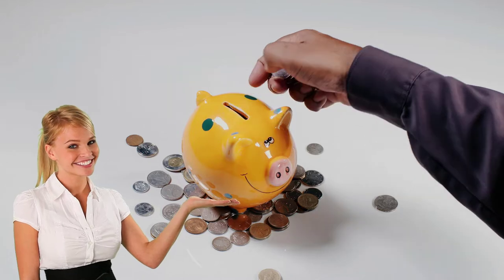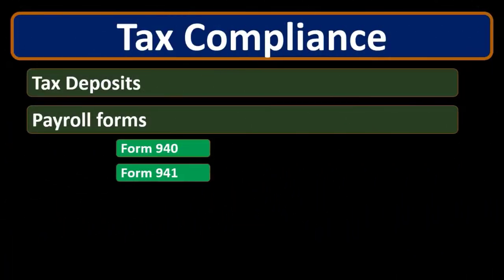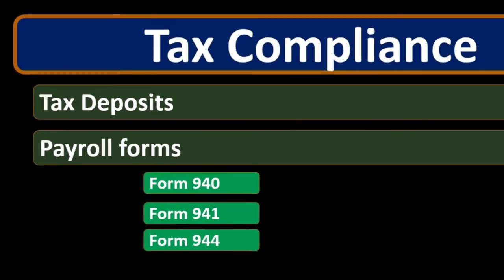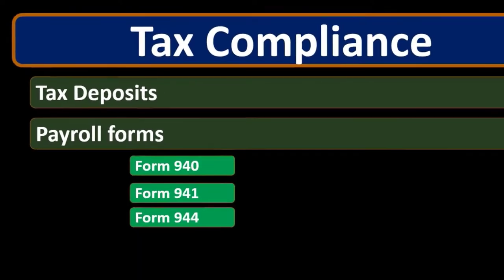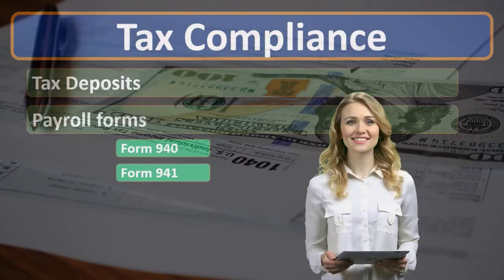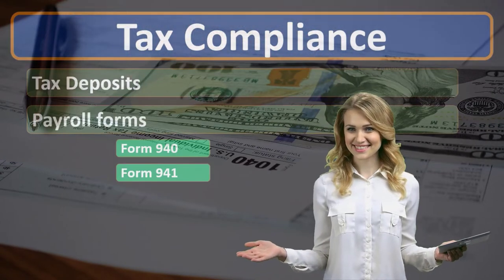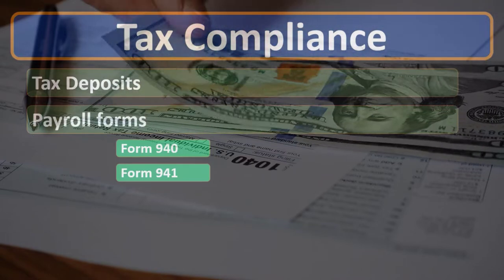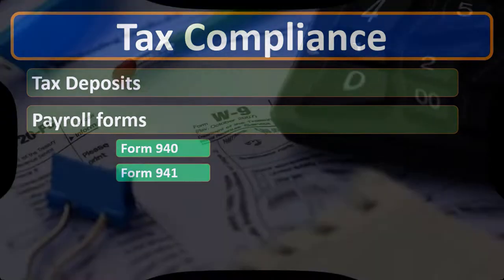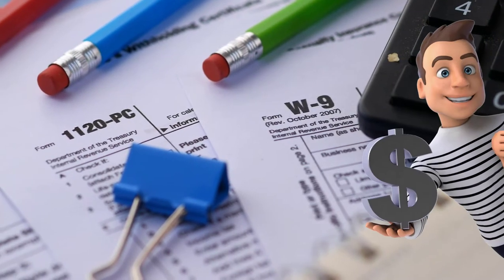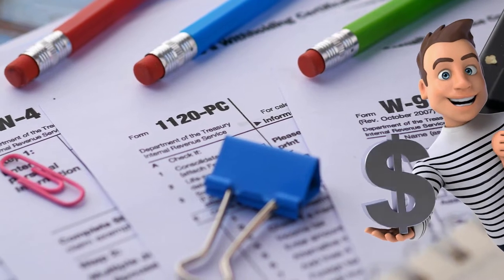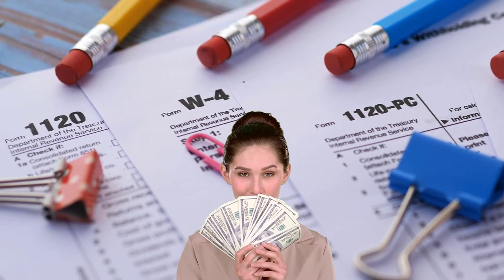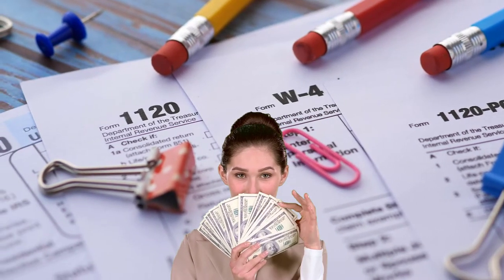Payroll forms we'll have to complete include Form 940 and Form 941. These are quarterly and yearly forms for reporting federal income tax, which includes FIT — federal income tax — for the employee. It's important to keep separate the fact that the employer also pays income tax on the company's business, while the federal income tax in payroll taxes represents the federal income tax withheld for our employees.